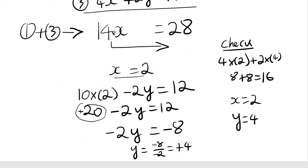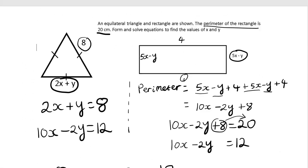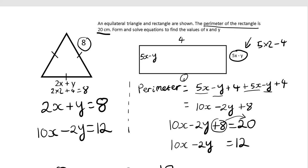Substituting x equals 2 and y equals 4 back in: for the triangle side, 2 times 2 plus 4 gives 8, which is correct. For the rectangle, 5 times 2 minus 4 is 10 minus 4, which is 6 — that would be the width of the rectangle.